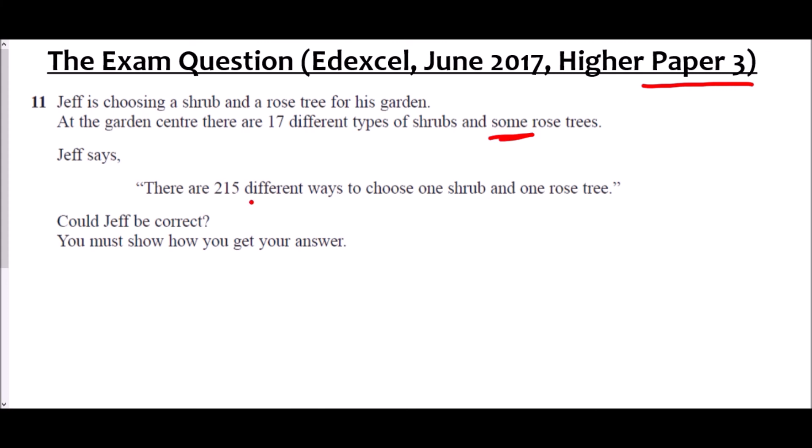Now, the fact that we're looking at the number of different ways to choose means we're looking at combinations. It means we need to use the product rule for counting. And so we need to think about the fact that there were 17 types of shrub and some trees. That means 17 times something, let's call it X, must equal 215. Now, the question is, can that actually work? So all we need to do is reverse that calculation. 215 divided by 17. Now, this is where our calculator comes in handy. If we do 215 divided by 17, we actually get an answer of 12.647.